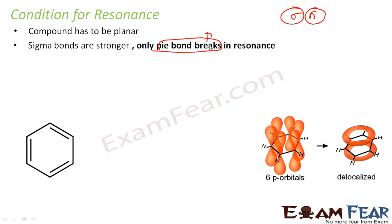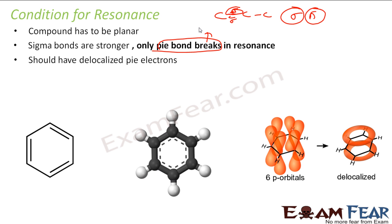For example, if you have a structure with a sigma bond and a pi bond, you can break only the pi bond because it is a weak bond. The third condition is that the compound should have delocalized pi electrons for resonance. So the conditions are: the molecule must be planar, only pi bonds break in resonance, and it must have delocalized pi electrons.